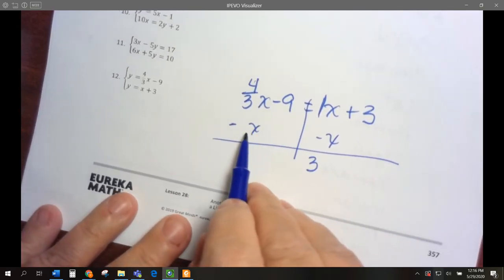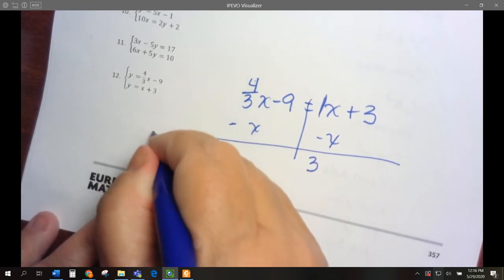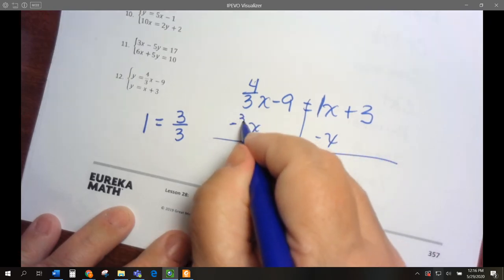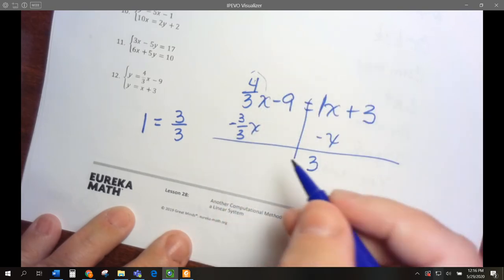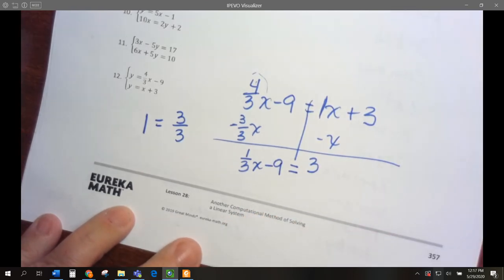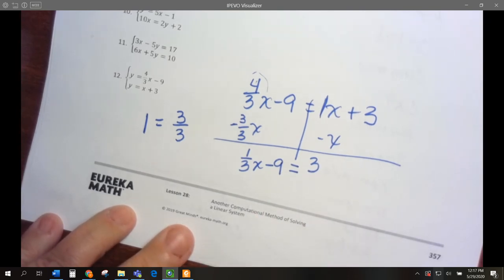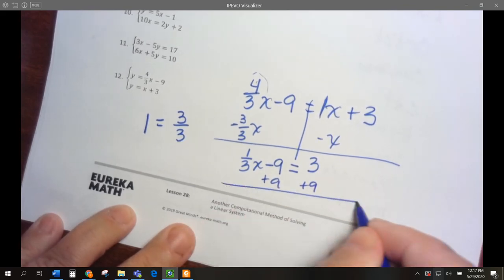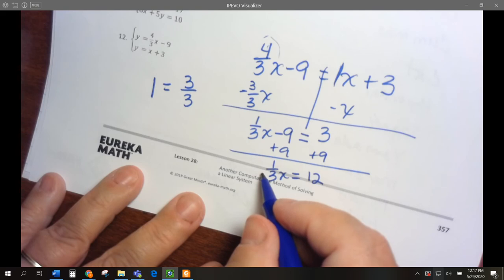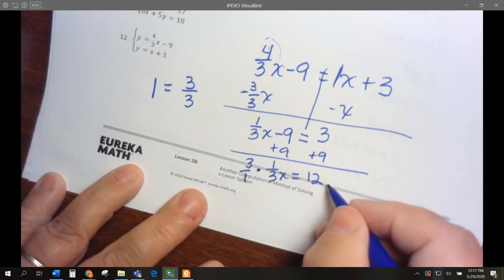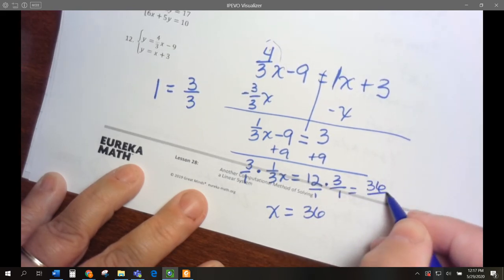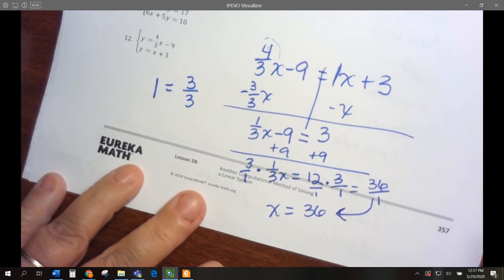Over here we get 3. Now this is in thirds. So how do we write 1 in thirds? 3 thirds. So I'm going to write this as 3 thirds x, which is the same as 1x. I get 1 third x minus 9 equals 3. Add 9 to both sides. We get 1 third x equals 12. I divide by 1 third, which is the same as multiplying by the reciprocal. So I multiply both sides by 3 over 1. I get x equals 36.